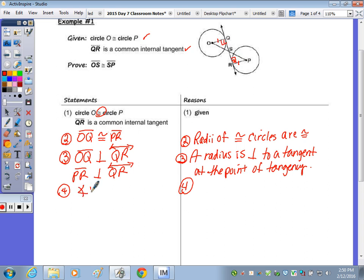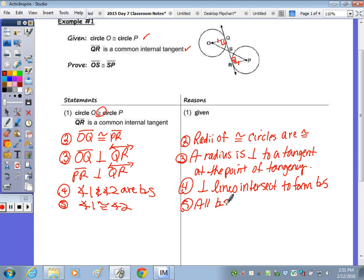So, number four, let's put some numbers in there, in our picture. Let's call this a one, and this a two. So, angle one and angle two are right angles. And then, what do you know about all right angles? They're congruent.